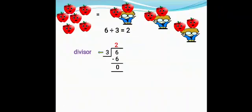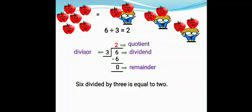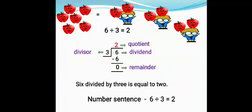Here you can see 3 is the divisor, that is the number by which we divide. 6 is the dividend, that is the number to be divided. 0 is the remainder, the number obtained after subtraction, and 2 is the quotient, the number obtained as the answer.